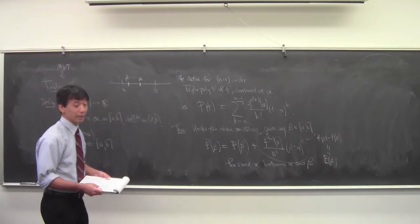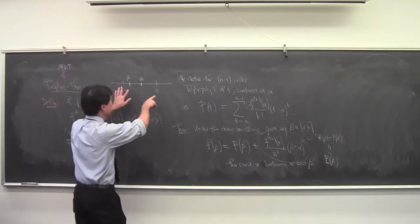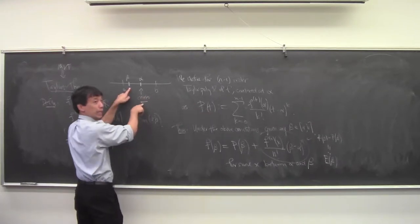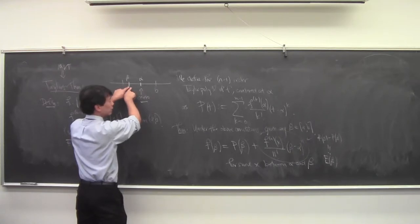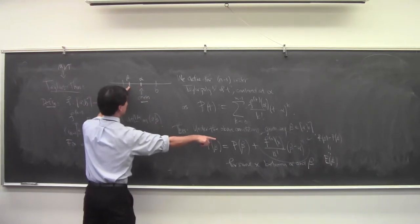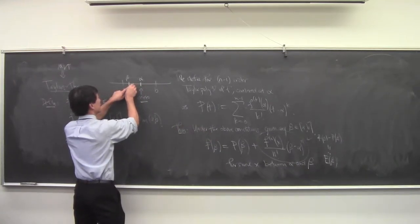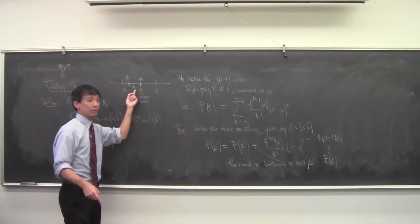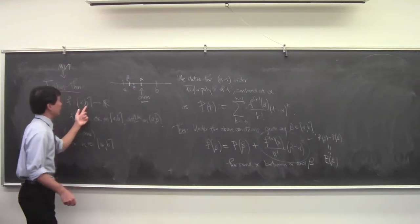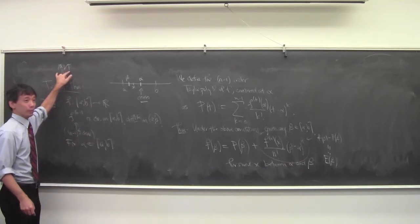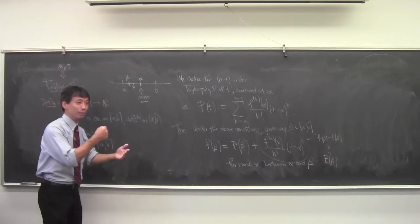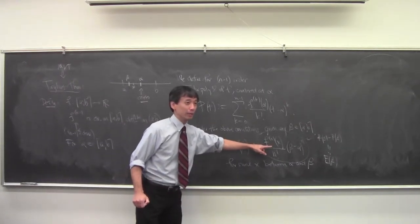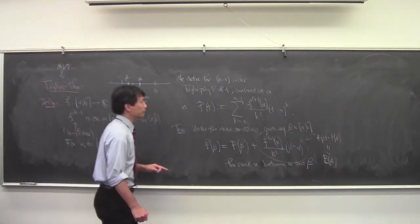In answer to how we get x: here's your center alpha, and the polynomial is centered at alpha. If you take any other point beta, the difference between your function and the polynomial can be found by evaluating this expression at some point x between alpha and beta. This x is mysterious in the same way the mean value theorem's point C is mysterious — it just says there exists such a point.